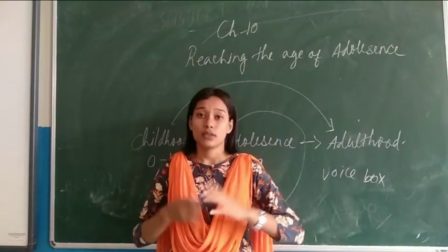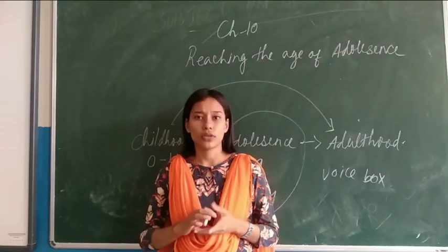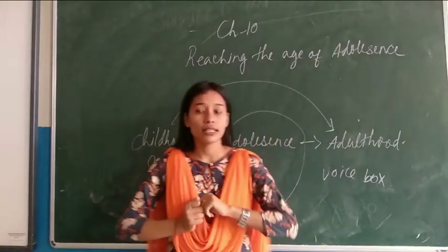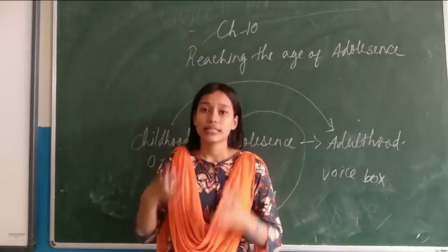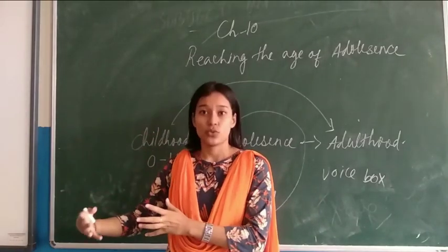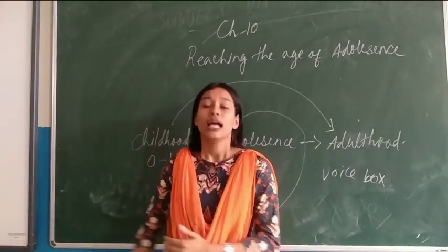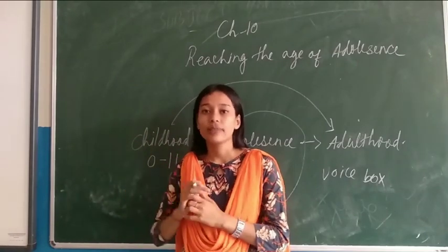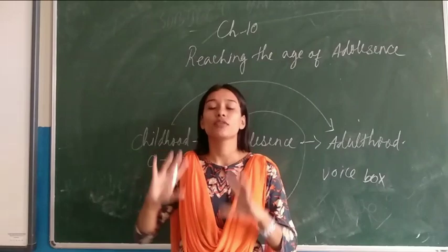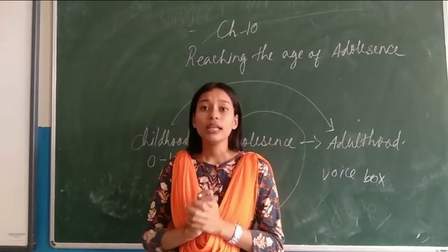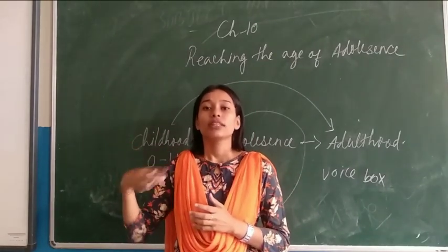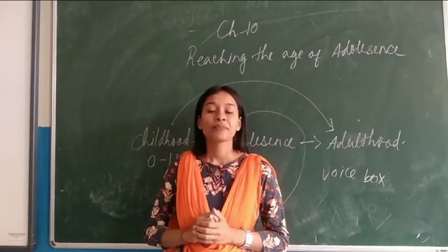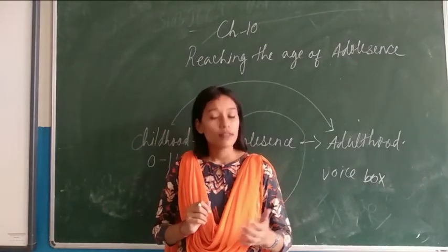Next is the maturation of sex organs. During adolescence, the sex organs mature. In males, the testes and penis become mature, develop completely, and start producing sperm. On the other hand, in females, in girls, the ovary will become enlarged and they will produce mature ovum. This is the development of sex organs.